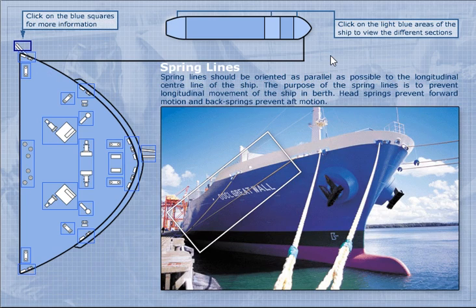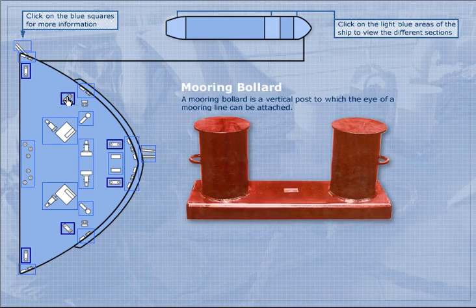Here you can find the fairlead and here you can find spring lines. Spring lines should be oriented as parallel as possible to the longitudinal centerline of the ship. The purpose of the spring lines is to prevent movement of the ship in berth — the head spring prevents forward motion and the back spring prevents aft motion.